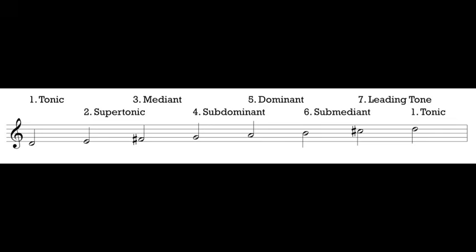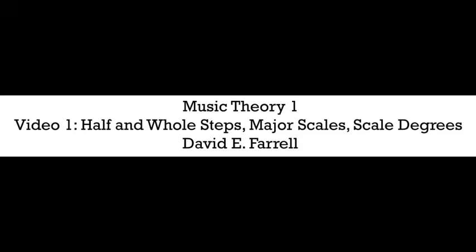Here you have all seven of the scale degrees for our major scale: the tonic, the supertonic, the mediant, the subdominant, the dominant, the submediant, and the leading tone. That's the end of our first video. In this video we talked about the difference between half and whole steps, how to use those to build a major scale, and the names of the different scale degrees in that major scale. Thanks for watching — see you guys next time.